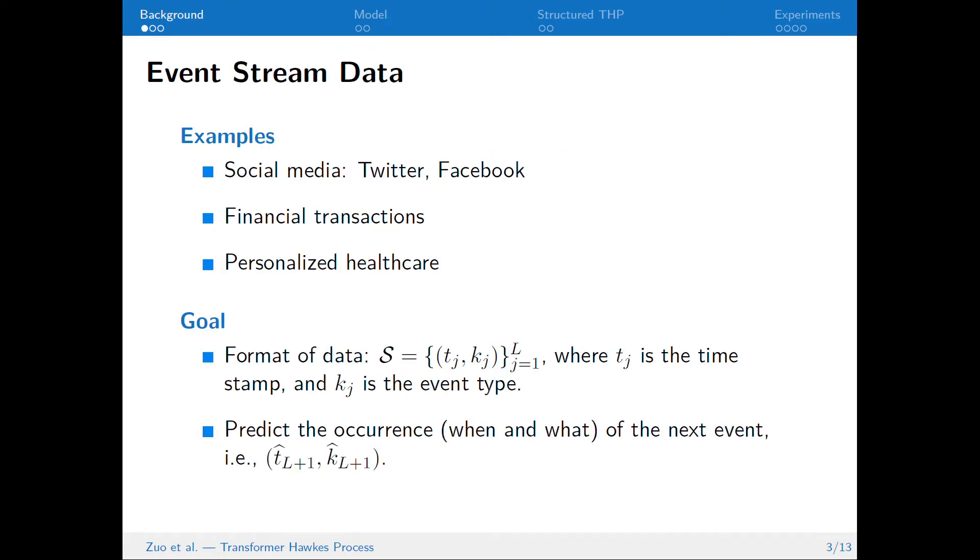Transformer Hawkes Process is used to model event stream data, which are natural in social media, financial transactions, and personalized healthcare. We are given a sequence of events, where each of the events is associated with a timestamp and an event type. Our goal is to predict the occurrence of the next event.